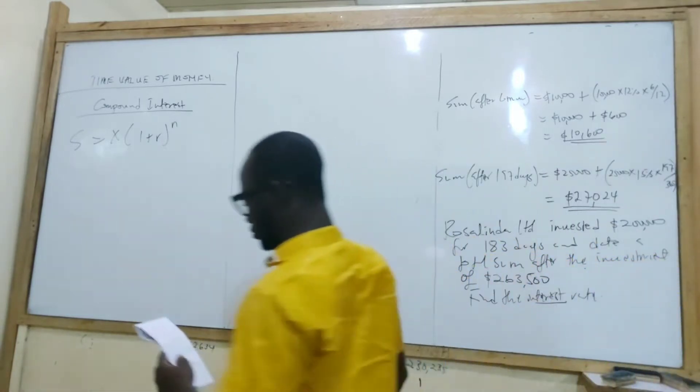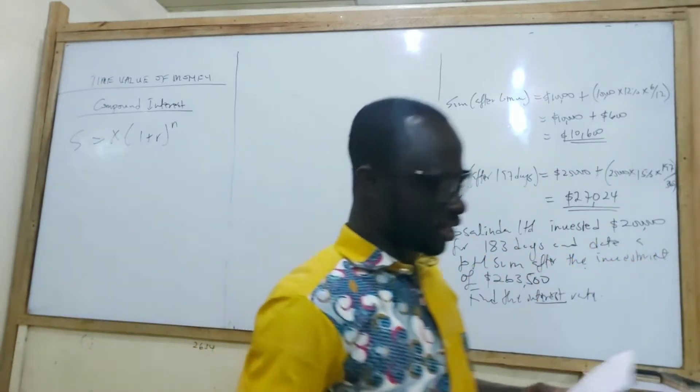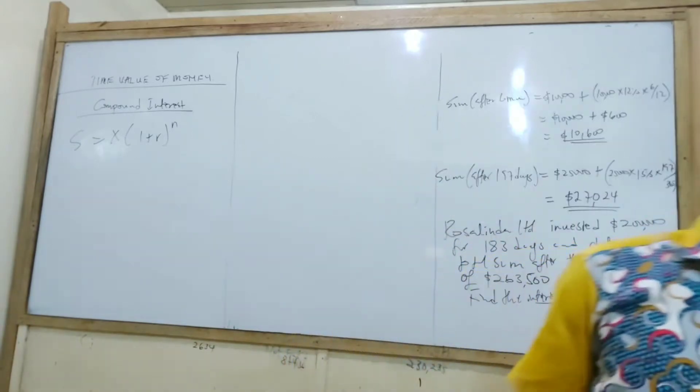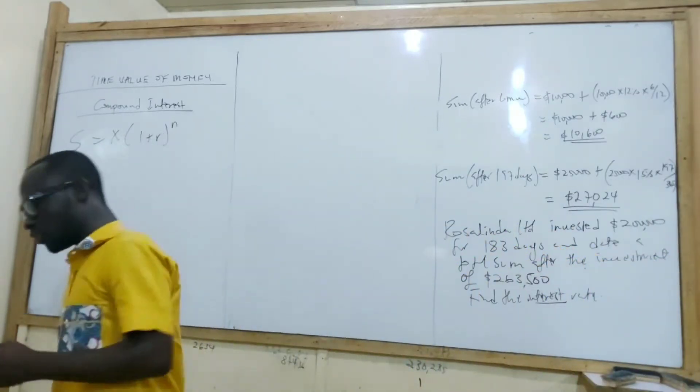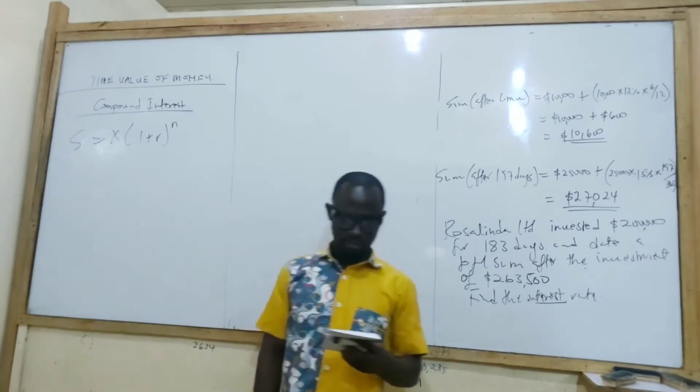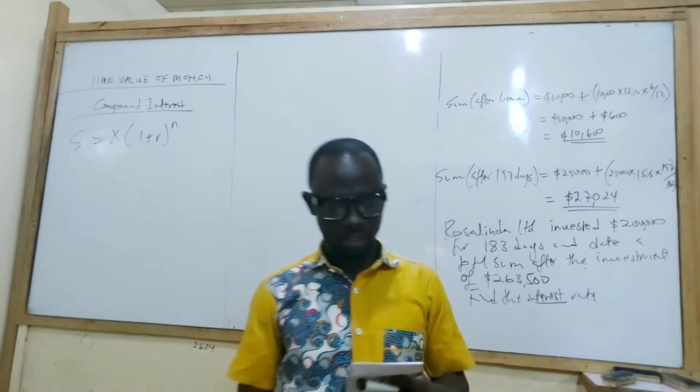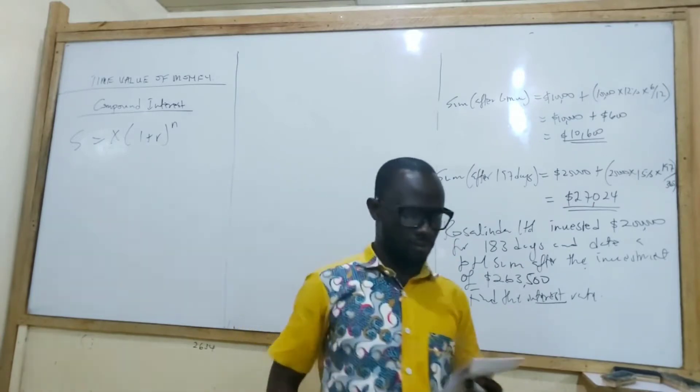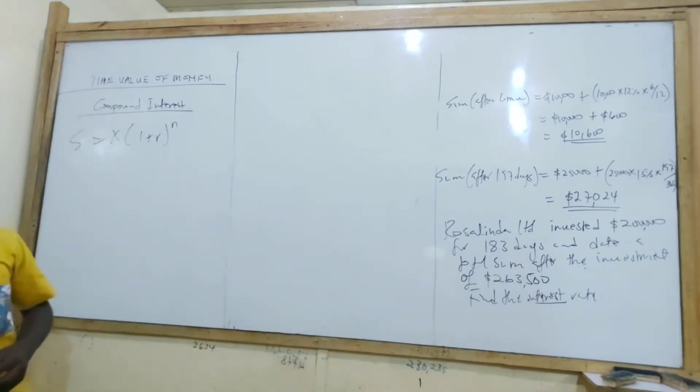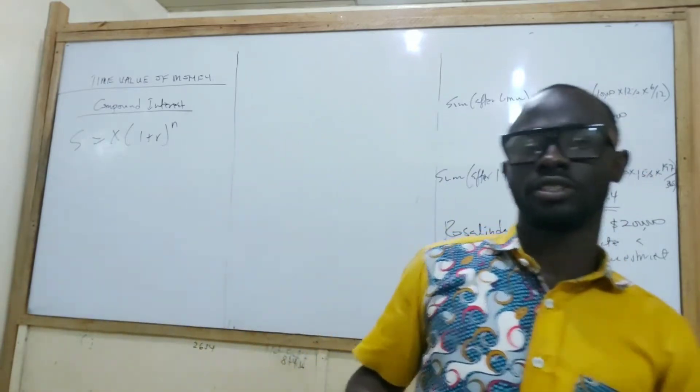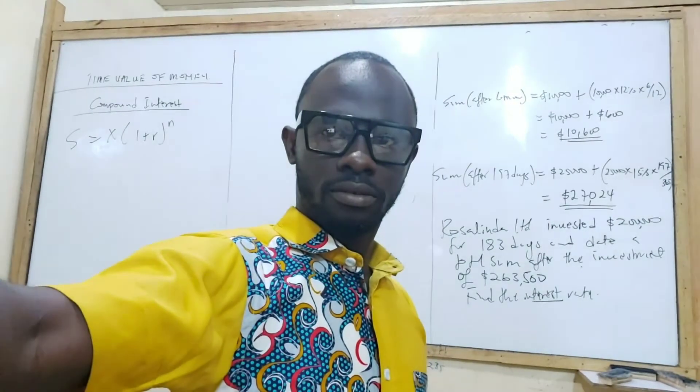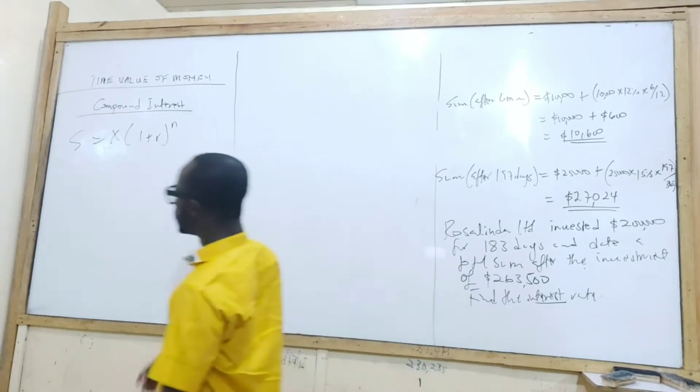Nana Limited invested $20,000 at 10% interest rate for three years. Calculate the total sum at the end of the three years. So how do we go about this?